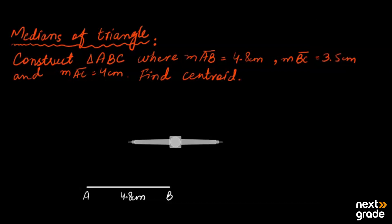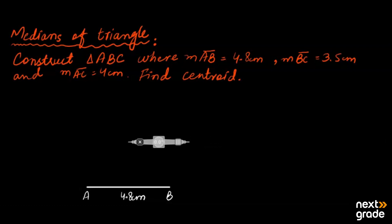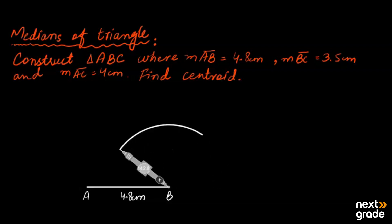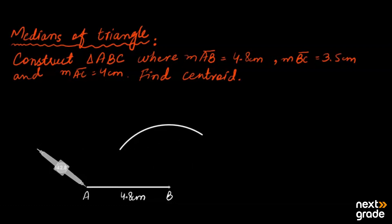With the help of a compass, we set the radius to 3.5 cm — the compass shows the direct scale. We open the compass to a three point five radius. We place the compass on point B and draw an arc. Then we adjust the compass for the other measurement.